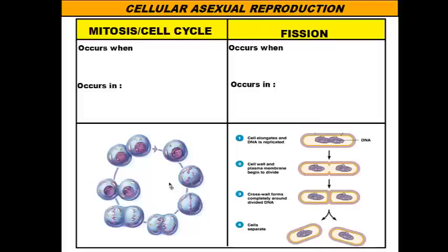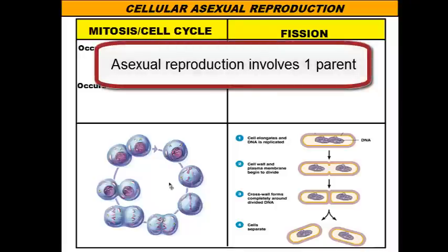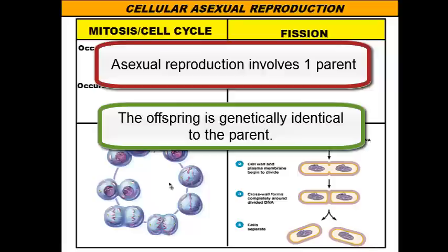Let's go over the three characteristics of asexual reproduction. First, the number of parents involved is only one — you can only have a single parent in asexual reproduction. Second, the offspring must be genetically identical to the parent, which means the baby has the exact same DNA and genes as the parent. This is different from humans, because you have half of your mom's genes and half of your dad's genes.